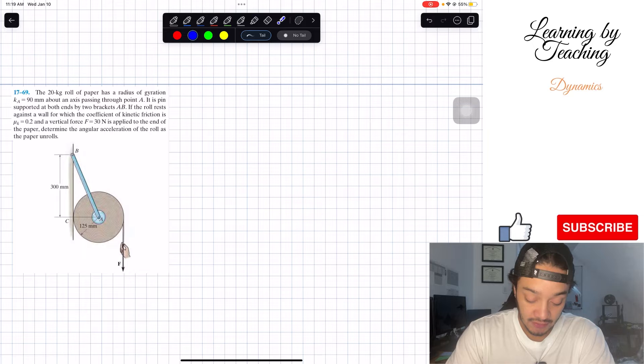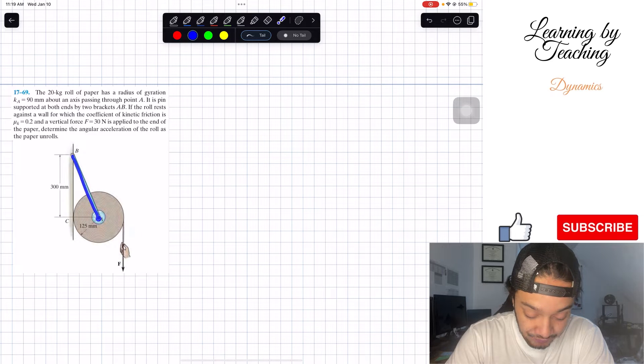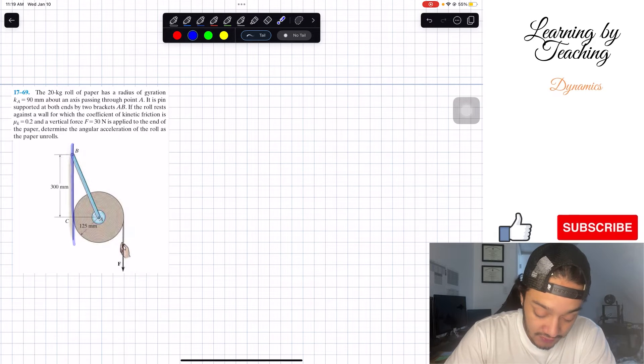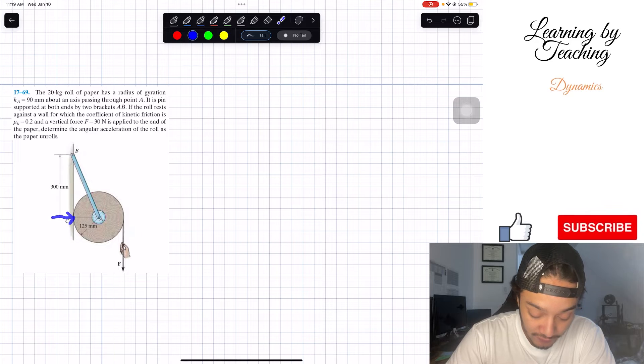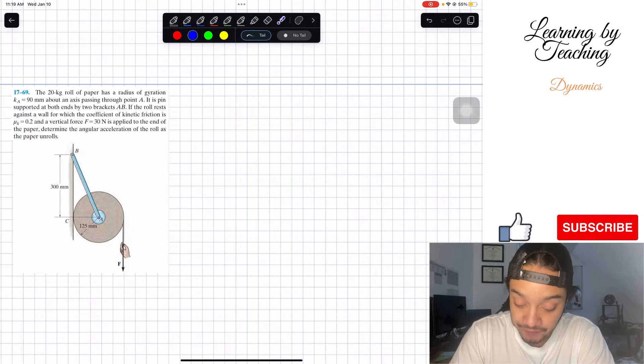As we have in here, we got our paper roll. We're pulling a force in here, however we are attached by these points A and B. The last thing we have to know is that we have a wall in here that is going to be applying a normal force and a frictional force regarding this mu sub k.